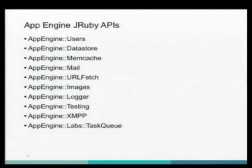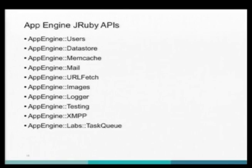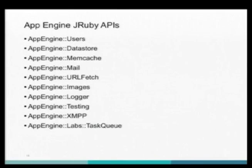Let's talk about the APIs — these are the Java APIs, and Ryan has created Ruby wrappers for them. First, there's the User API, which lets you build an app where anyone from a given domain can log in using Google login — so you don't create a user pool or passwords, you just let people use a Google account. There's also a Datastore API with wrappers that wrap the Java API from Ruby, and Ryan's DataMapper API works on top of that.